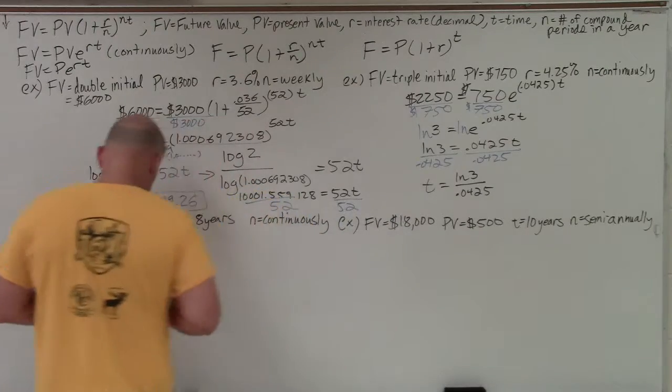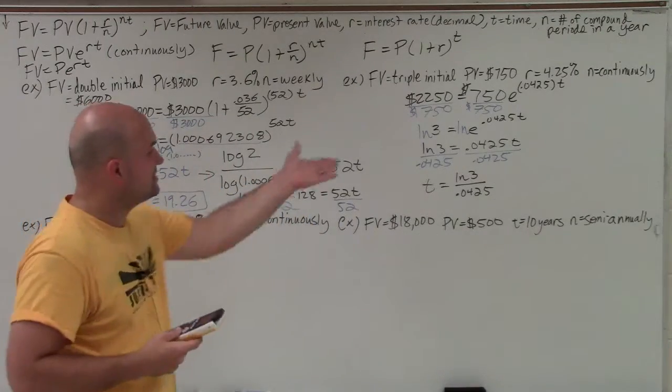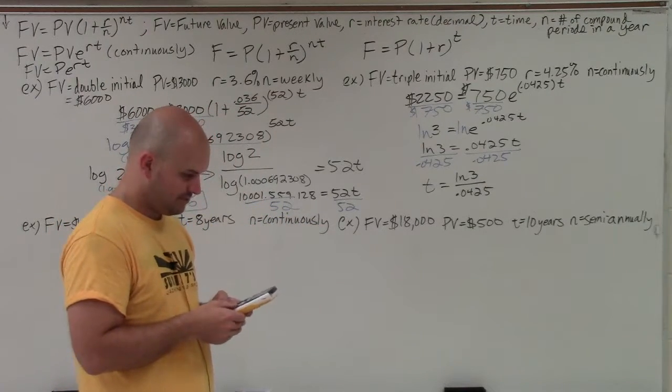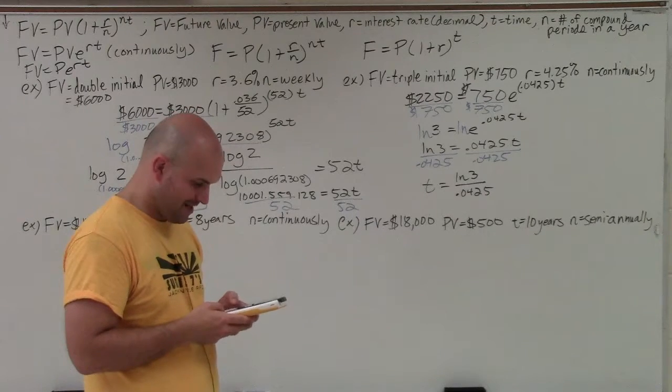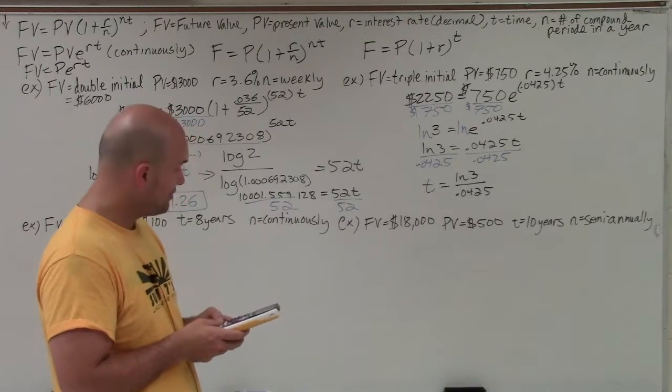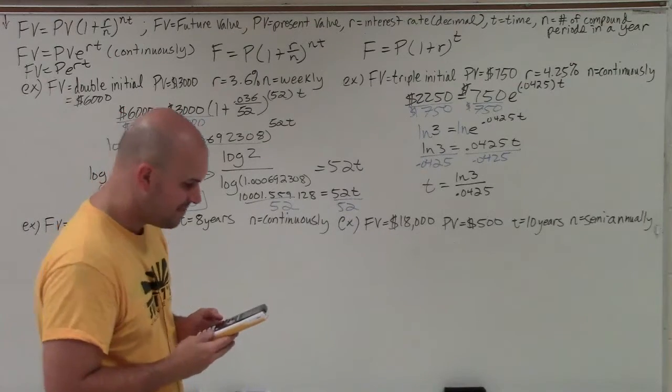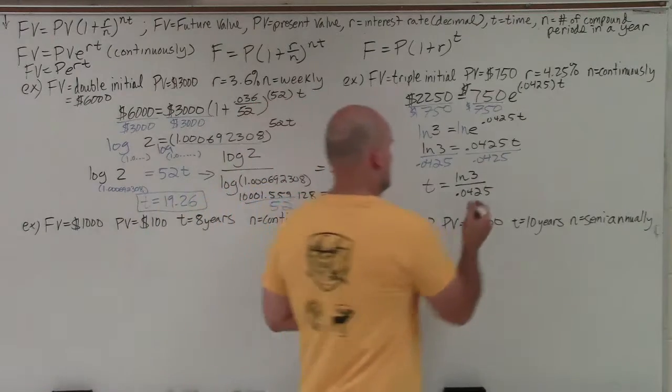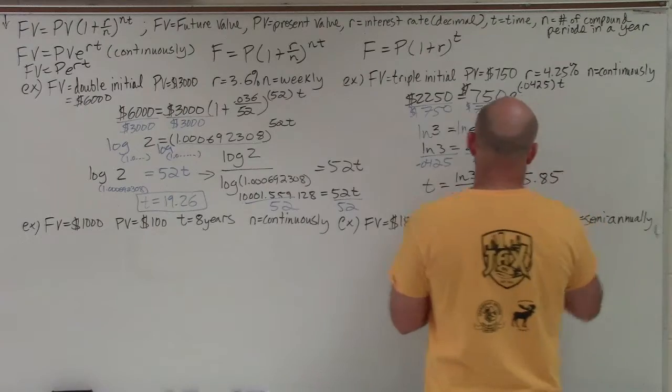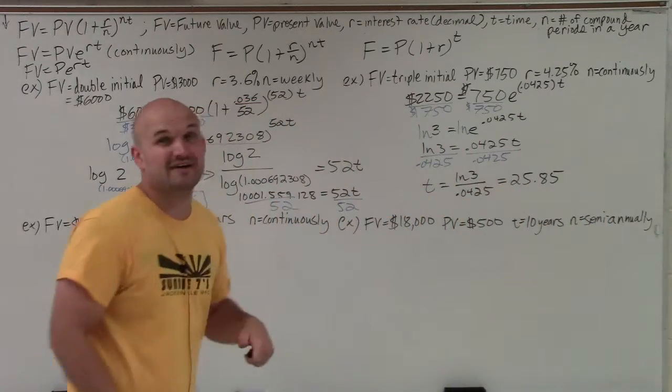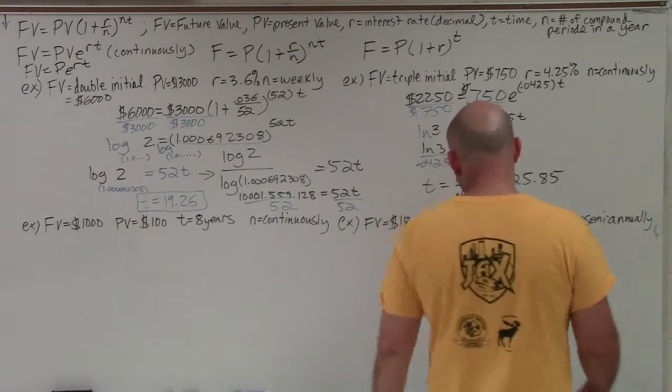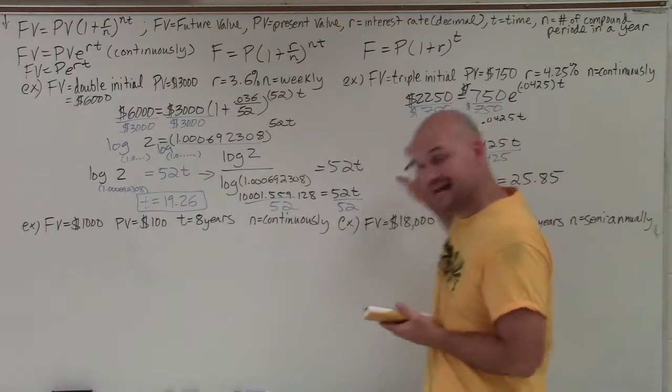Now it was much easier than the first problem. Now I can just plug that into my calculator. So I'll just take ln of 3. So I type ln of 3. And then close the parentheses. And then divide it by 0.0425. And that gives me 25.85 as I round to the nearest hundred. So therefore, that's going to take you 25 years to triple your investment, earning an interest rate of 4.25. OK, so that's how you figure out t with logarithms and natural logarithms.